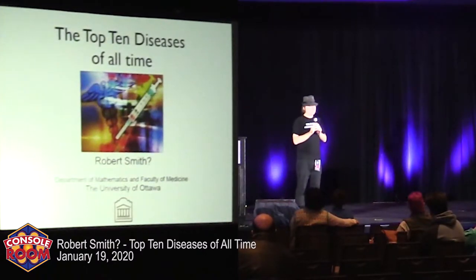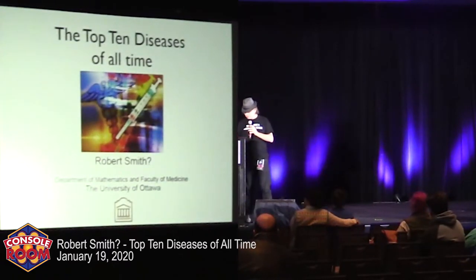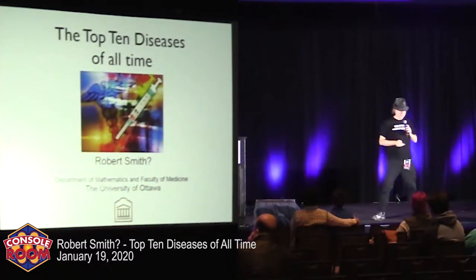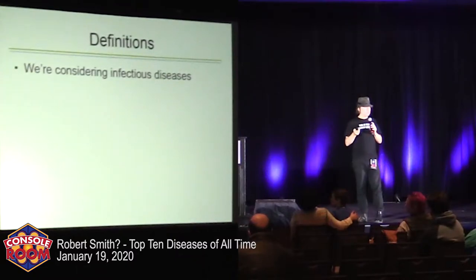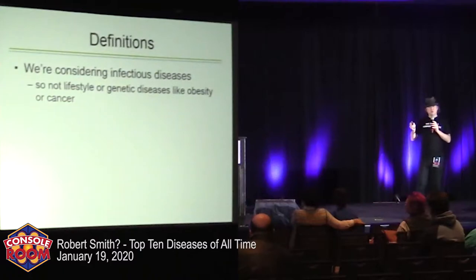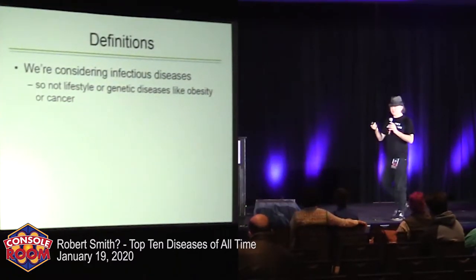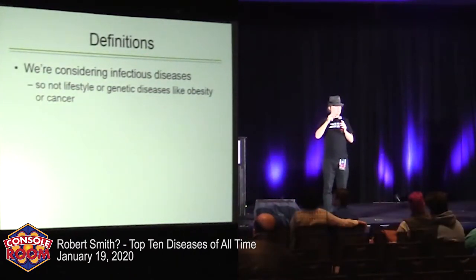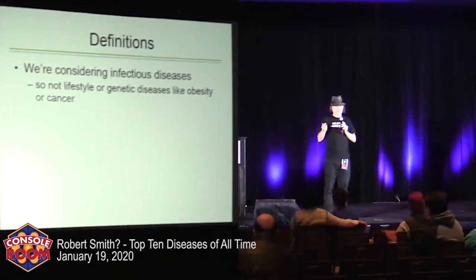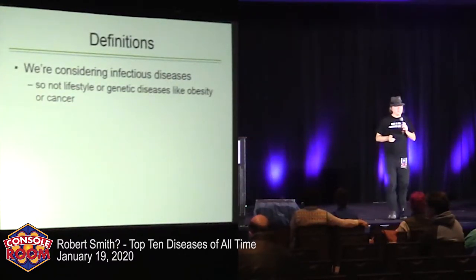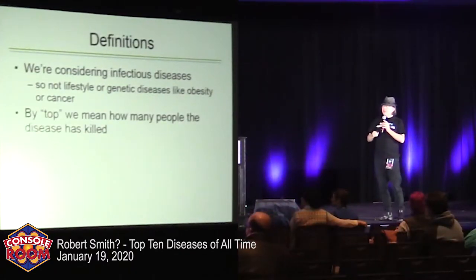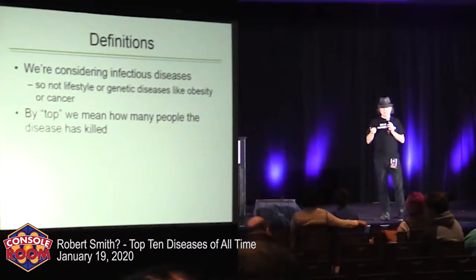Let me talk about some of the diseases that were named. I'm talking about infectious diseases, not genetic ones. Some infectious diseases do cause cancer — hepatitis B causes liver cancer, human papillomavirus causes cervical cancer and some penile and anal cancers. We actually have vaccines against some of these, which means we have vaccines against cancer. My specific measure is how many people the disease has killed, and I want to acknowledge the complexity of that, because it's not always the best measure.